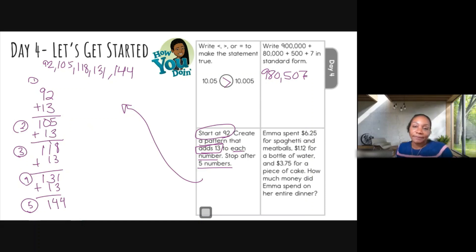Let's read it. Emma spent $6.25 for spaghetti and meatballs, $1.12 for a bottle of water, and $3.75 for a piece of cake. Sounds good. How much money did Emma spend on her entire dinner? So that's everything that she paid for. So I need to erase this again, give me some room. And let's write everything out.